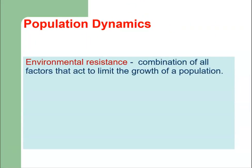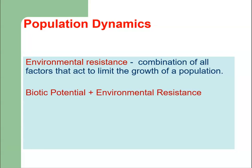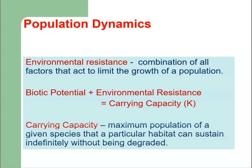There is environmental resistance, which is the combination of all factors that act to limit the growth of a population. The combination of biotic potential and environmental resistance is equal to the carrying capacity, denoted by K. Carrying capacity is the maximum population of a given species that a particular habitat can sustain indefinitely without being degraded.